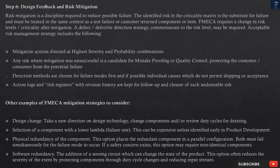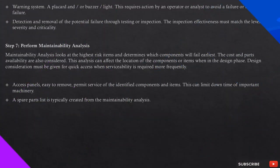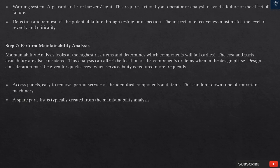Physical redundancy of the component: this option places the redundant component in a parallel configuration. Both must fail simultaneously for the failure mode to occur. If a safety concern exists, this option may require non-identical components. Software redundancy: the addition of a sensing circuit which can change the state of the product. This option often reduces the severity of the event by protecting components through duty cycle changes and reducing input stresses. Warning system: a placard and/or buzzer/light — this requires action by an operator or analyst to avoid a failure or the effect of failure. Detection and removal of the potential failure through testing or inspection — the inspection effectiveness must match the level of severity and criticality.